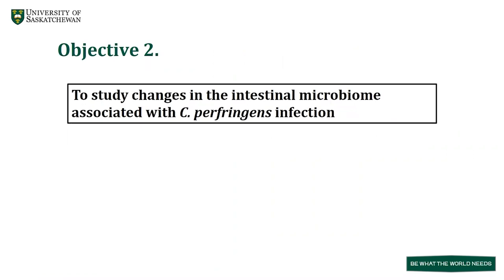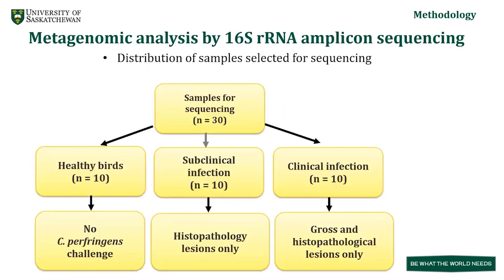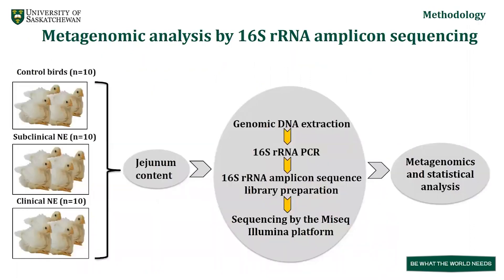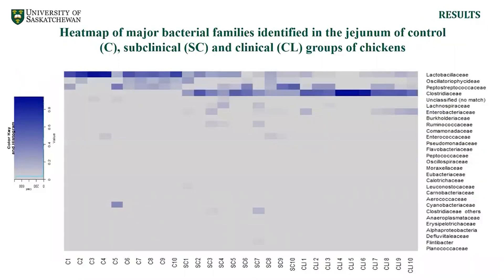We performed metagenomic analysis by amplicon sequencing on samples collected during the objective one trial. Total samples were n equals 30, divided into three categories of n equals 10 each: healthy birds with no C. perfringens challenge, birds with only histopathology lesions classified as subclinical, and birds with both gross and histopathology lesions classified as clinical. Genomic DNA was extracted from intestinal contents, followed by 16S rRNA PCR, amplicon sequencing, library preparation, and sequencing on the MiSeq Illumina platform. Data was analyzed in Geneious Prime software followed by statistical analysis.